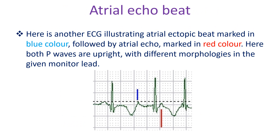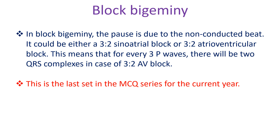Here is another ECG illustrating an atrial ectopic beat marked in blue, followed by an atrial echo marked in red. Here both P waves are upright with different morphologies in the given monitor lead. In block bigeminy, the pause is due to the non-conducted beat — it could be either a 3:2 sinoatrial block or a 3:2 atrioventricular block, meaning that for every 3 P waves there will be 2 QRS complexes in the case of 3:2 AV block.